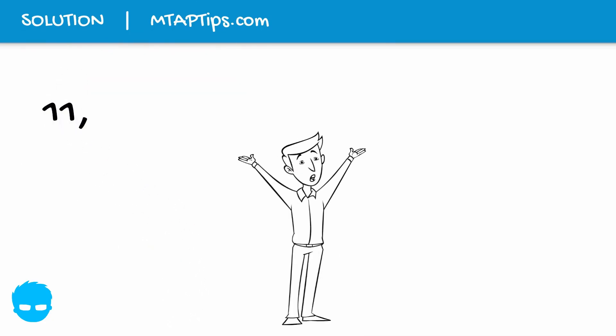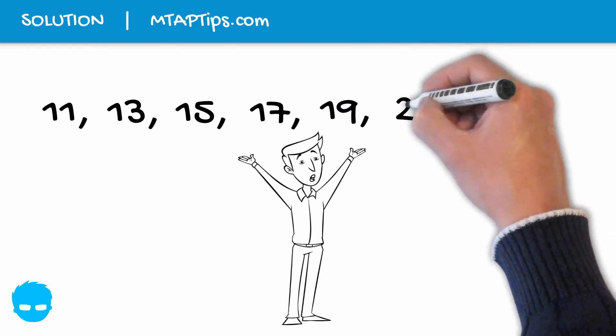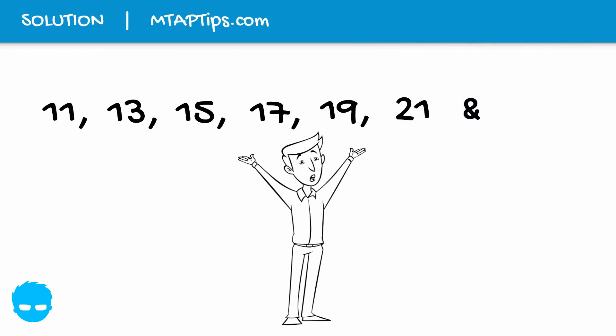So we have 11, 13, 15, 17, 19, 21, and the seventh number is 23.